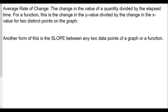So, average rate of change — in general, the average rate of change is a change in the value of a quantity divided by elapsed time, usually based upon time. For a function, this is the change in y-value divided by change in x-value for two distinct points on the graph. Another form is the slope between any two data points of a graph of a function.